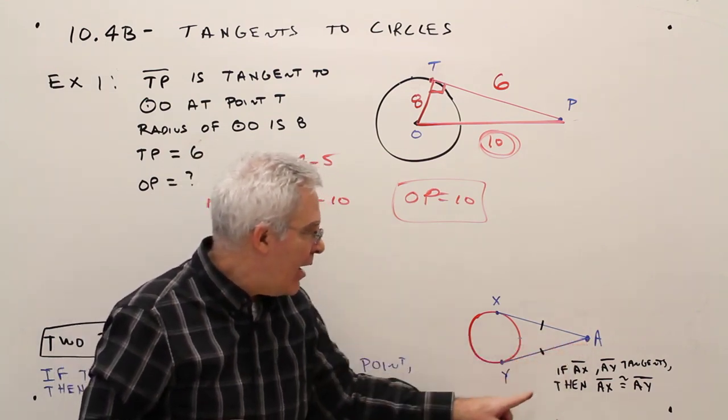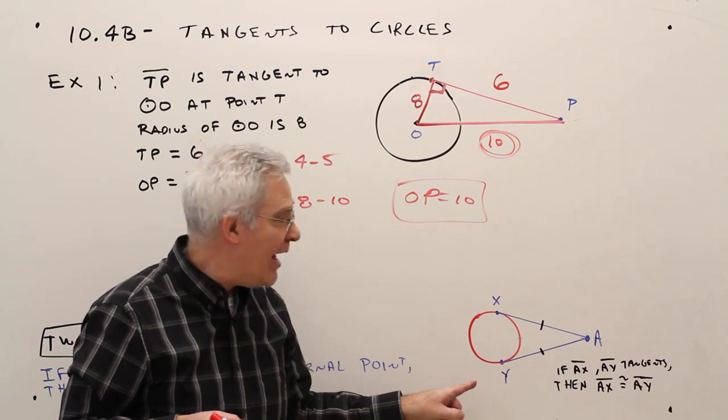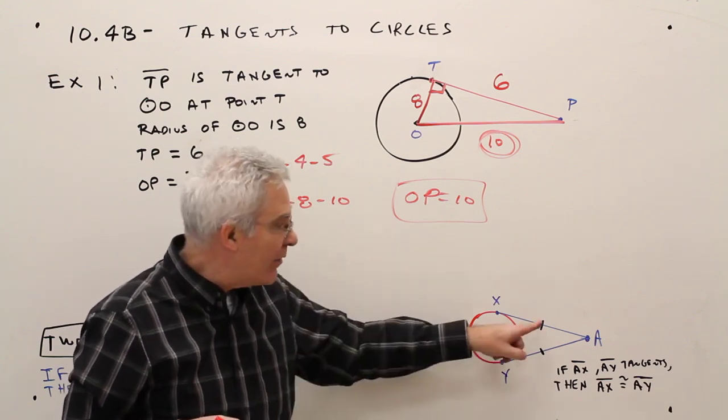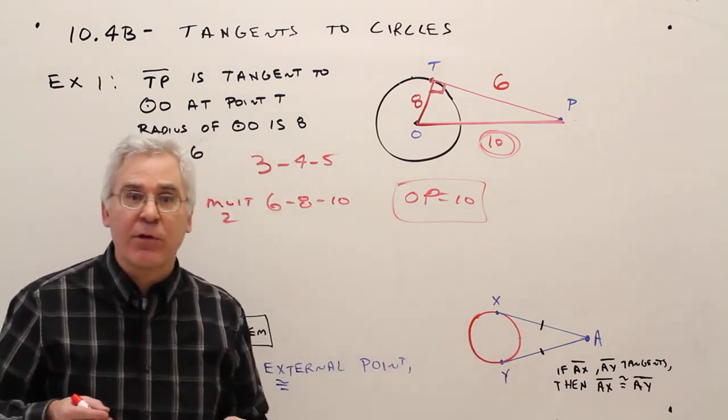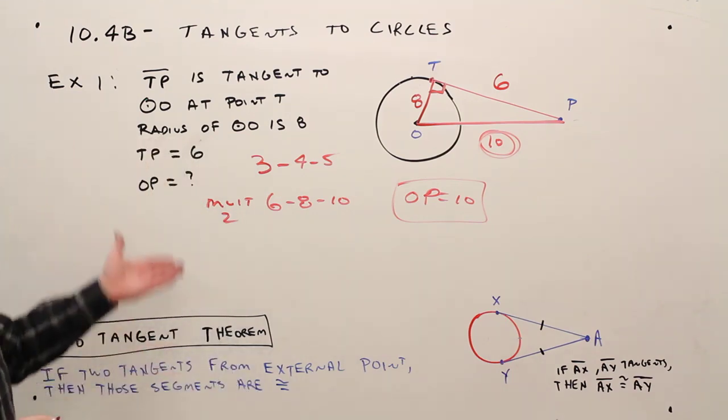Here's point A, and I'm saying that AX and AY are both tangents. If that's the case, then AX is congruent to AY, and we'll use that in some future problems. So there you have it.